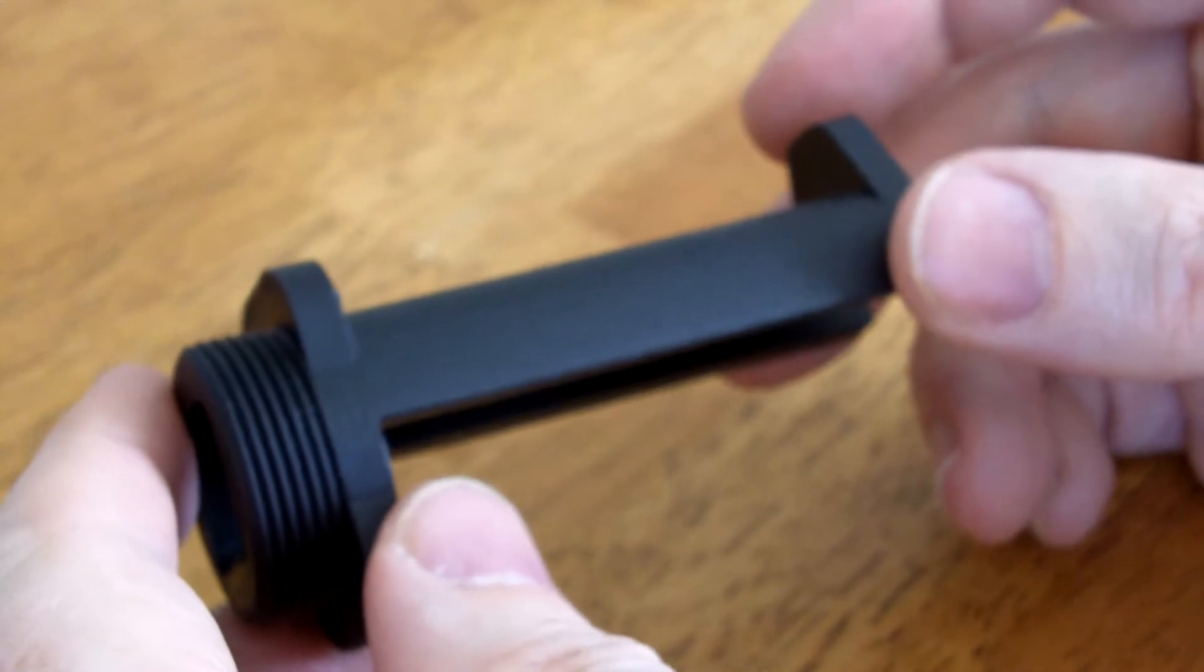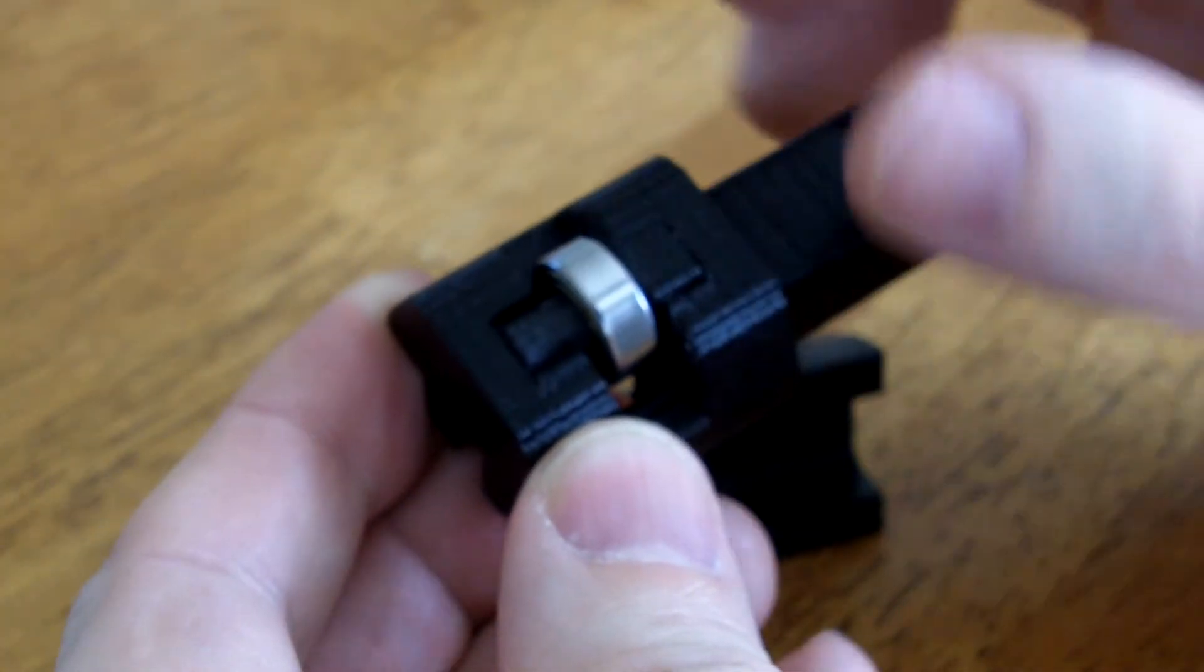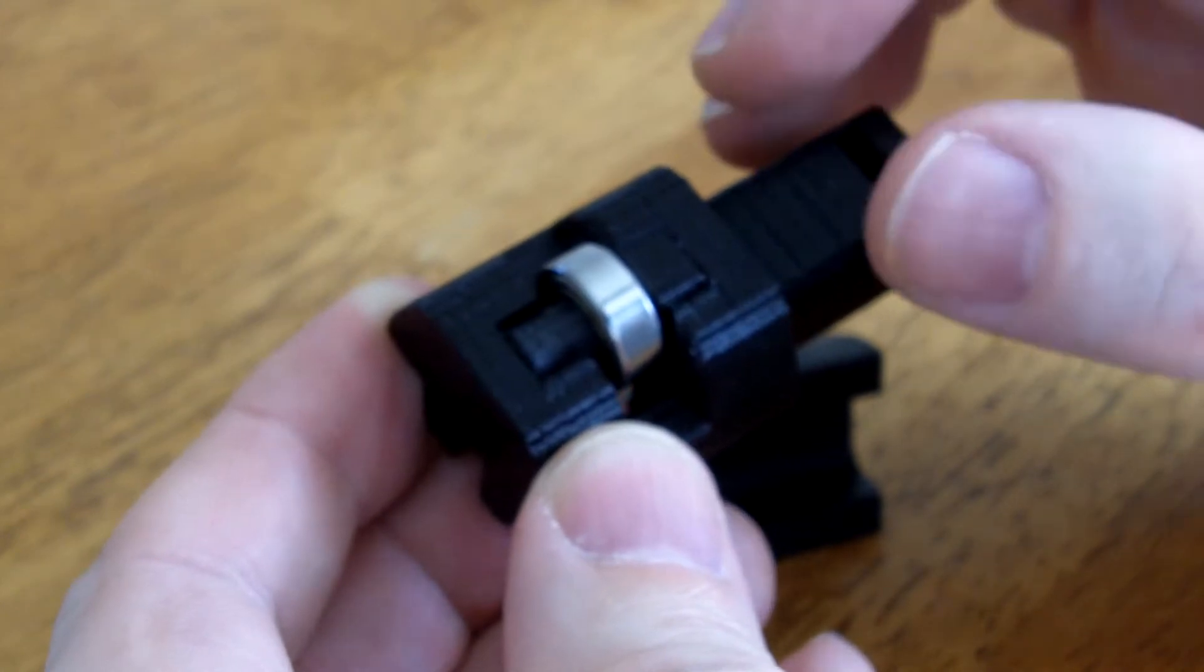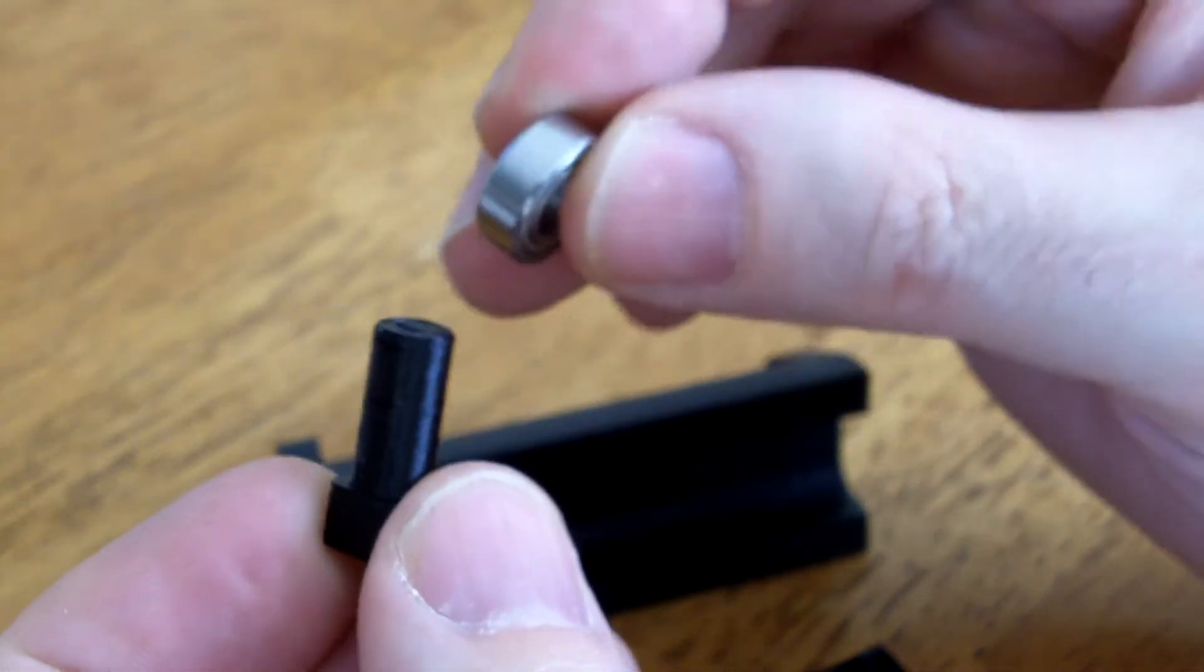I'm just going to show how it assembles. So part A is this part right here, and this has got a 7x14x5mm bearing and a bearing pin. Right here, these two.